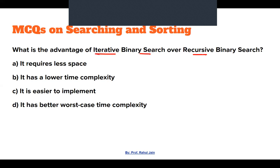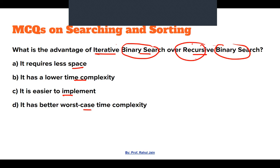Next question: What is the advantage of iterative binary search over recursive binary search? Options: requires less space, lower time complexity, easier to implement, or better worst-case time complexity. Both are binary search — one iterative, one recursive. When we use recursion, space consumption is more. In iterative, it requires lesser space, so option A is correct.